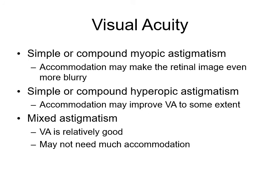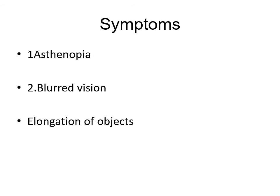Regarding visual acuity: in simple or compound myopic astigmatism, accommodation may make the retinal image even more blurry. In simple or compound hypermetropic astigmatism, accommodation may improve visual acuity to some extent. In mixed astigmatism, visual acuity is relatively good. Symptoms a patient may present with include asthenopia — tiredness of the eyes relieved by closing them, characterized by difficulty in focusing, transient blurred vision, dull aching eyes, frontal headache, nausea, and drowsiness — especially marked in low astigmatism.